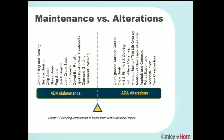FHWA and the Department of Justice got together to address questions about what's considered maintenance versus alterations, and they put out a technical memo defining those differences. When you have a maintenance project, you're not required to bring curb ramps into full compliance. For example, if you're filling a pothole, that's not going to trigger the need to bring adjacent curb ramps into compliance.